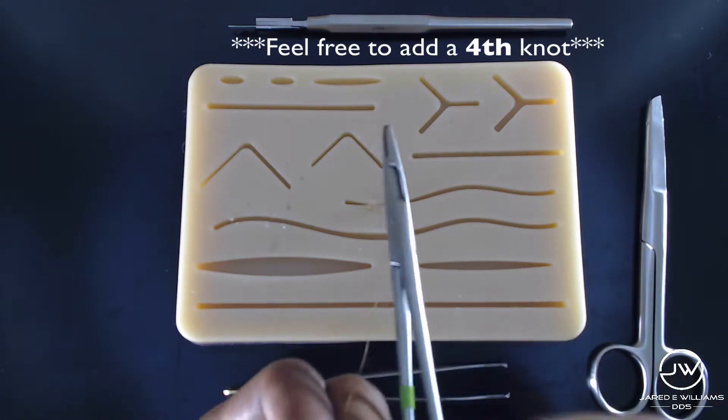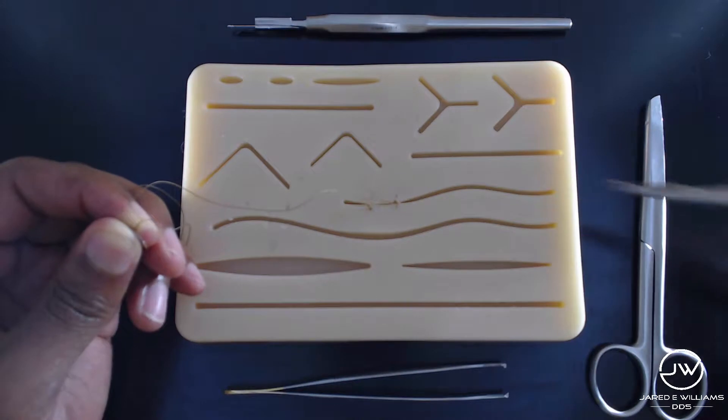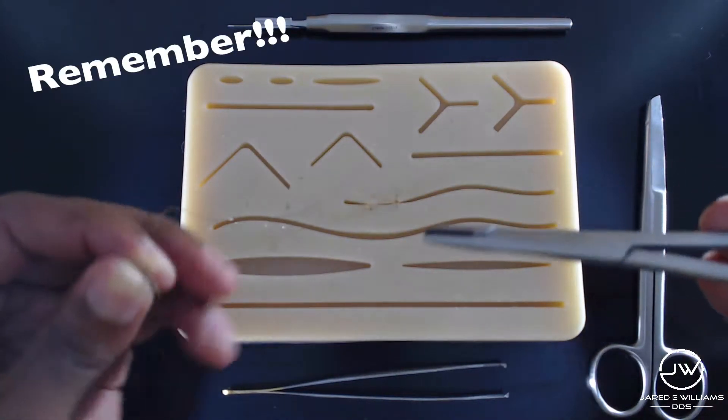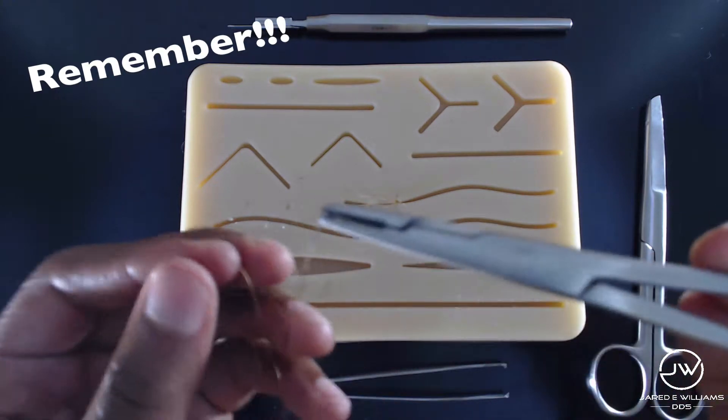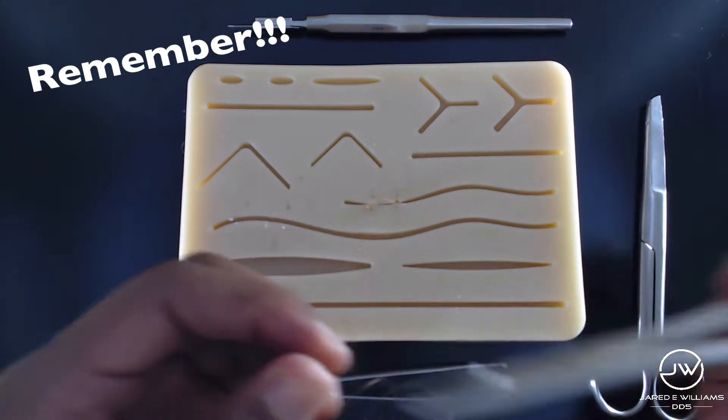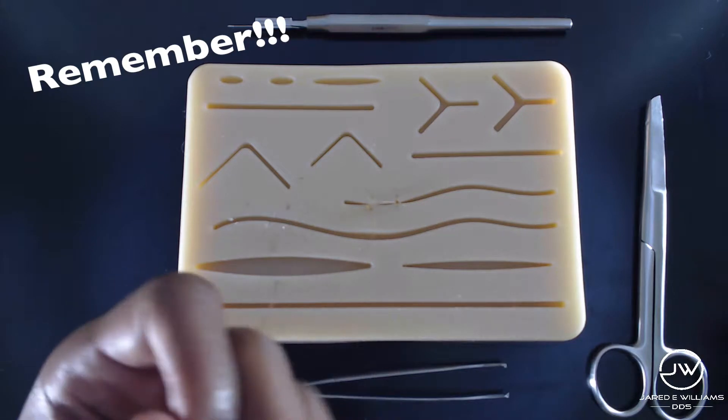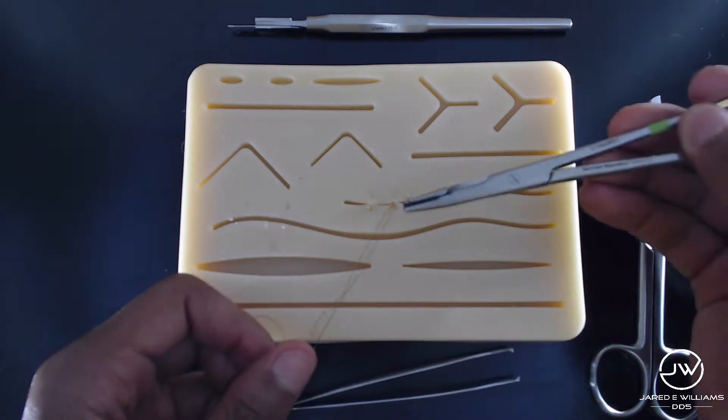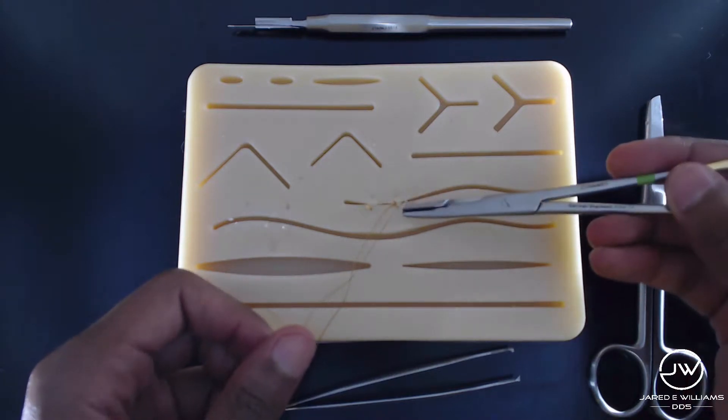And you want to make sure that you cut that tail that has about two millimeters left because this could unravel and ruin your suture and it could come loose. So, we're going to start our continuous suture here. And as you can see, that's just a simple interrupted suture. And we're going to go ahead and start our continuous process.